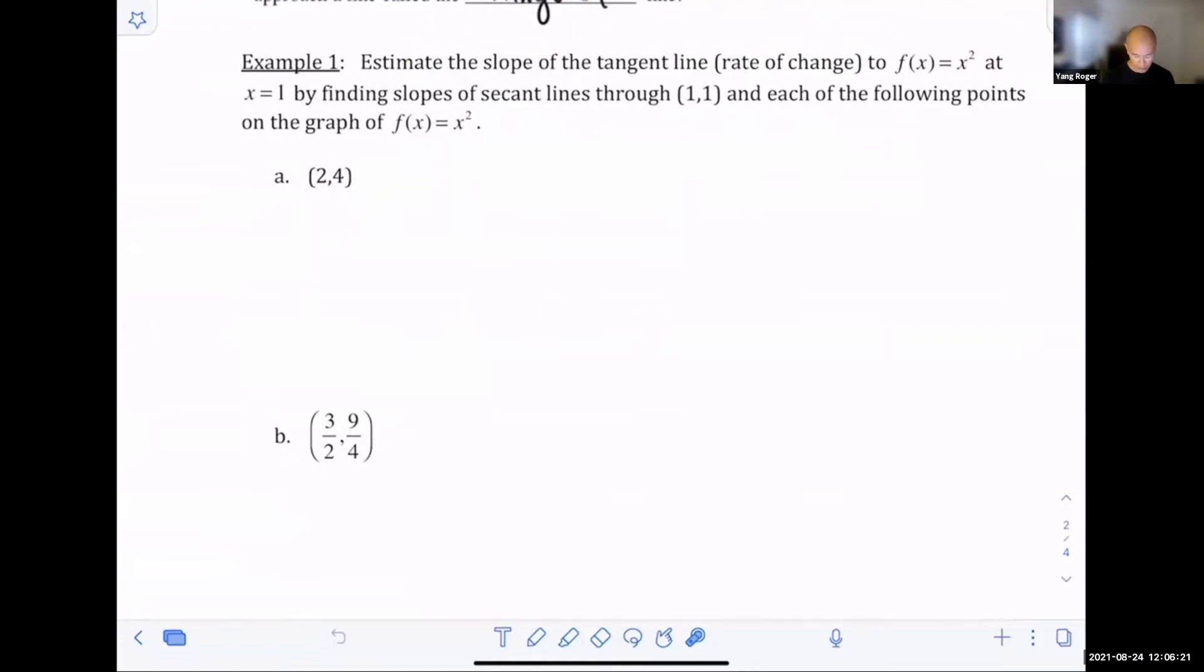In example one, we're going to fix one of the points. This says estimate the slope of the tangent line, which is the rate of change or the instantaneous velocity.